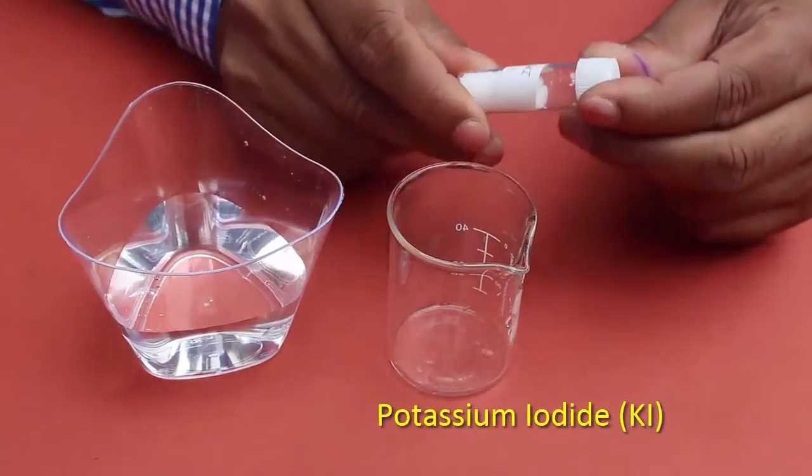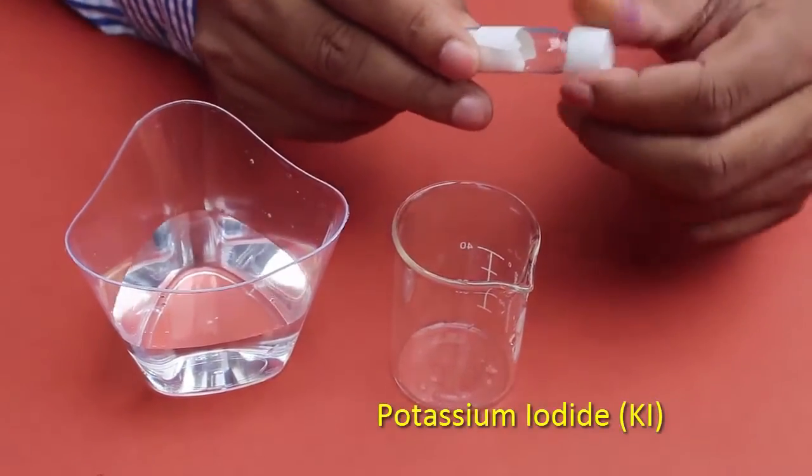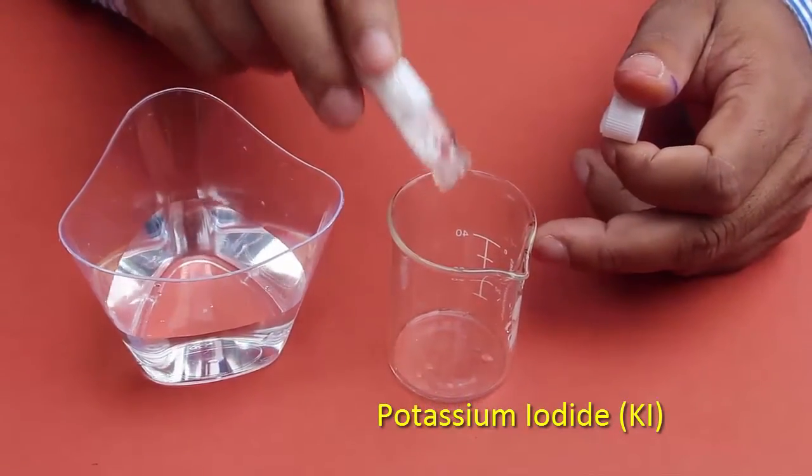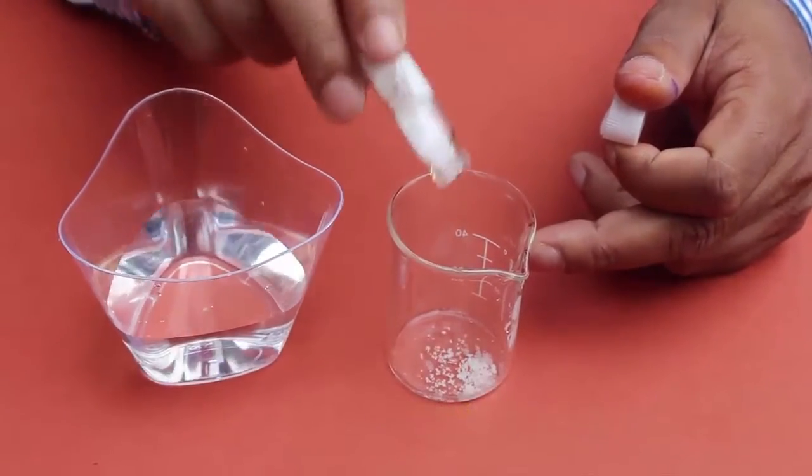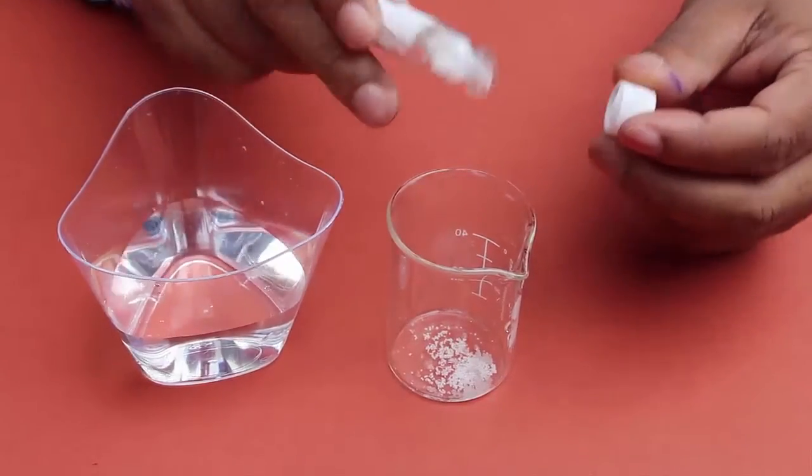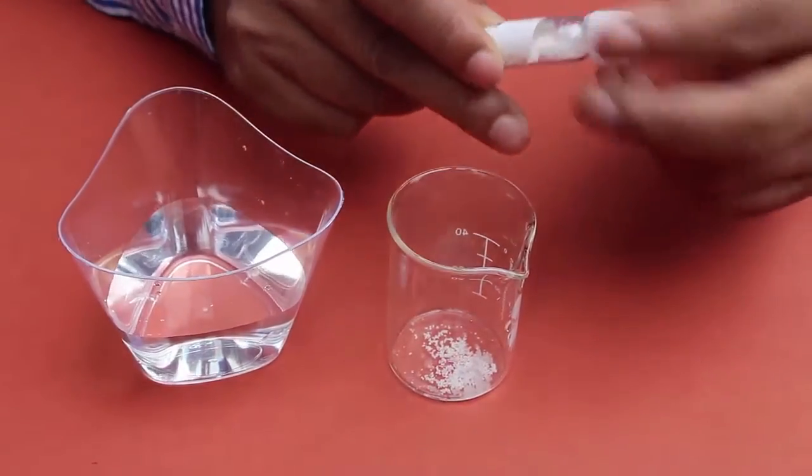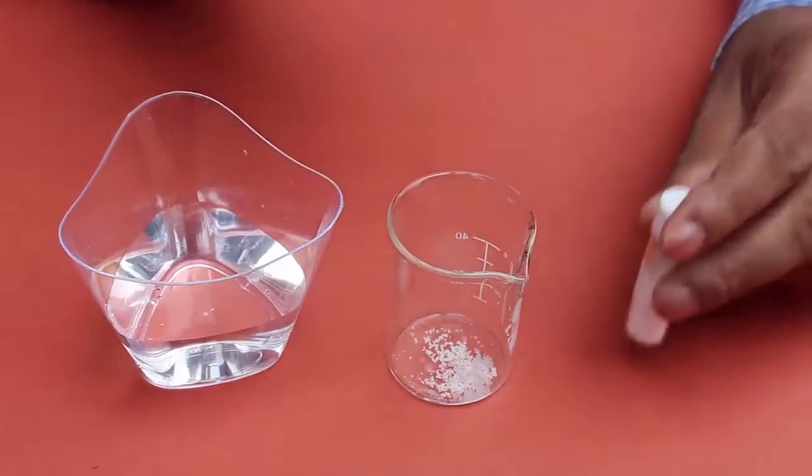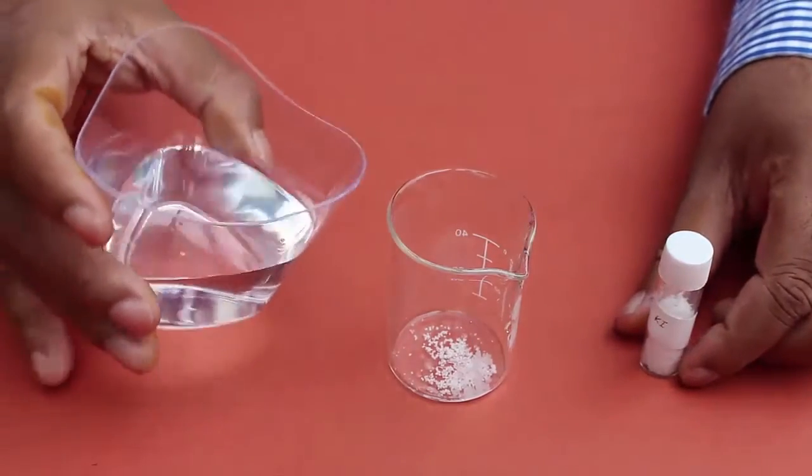Similarly we will also prepare a solution of potassium iodide. Place some crystals of potassium iodide into an empty beaker, add some water and stir continuously.